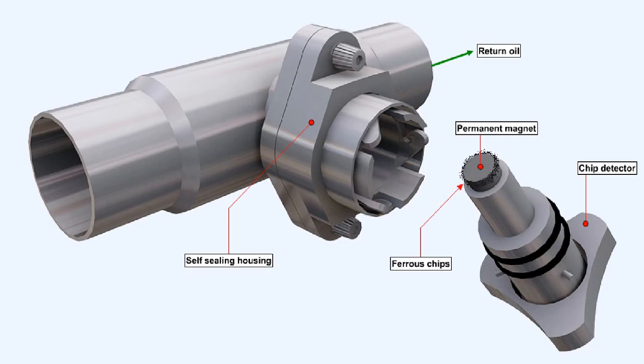Contamination of the magnet by iron filings is illustrated here. This type of contamination can be taken as evidence of impending failure in the bearing chamber which is being monitored by that particular chip detector.